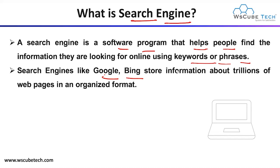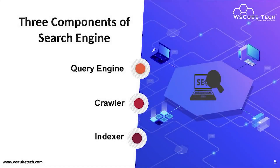Search engines can store information about billions of web pages in an organized format. Now we need to know how the search engine works — what backend activities happen when you search a particular query. We have three components of a search engine: first, the query engine, which processes your query to the crawler and to the search engine database to find that information.